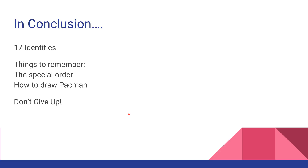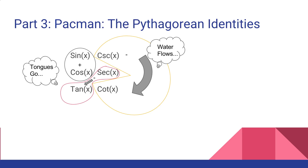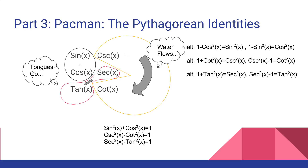So in conclusion, you've quickly learned 17 identities. You were probably staring at that trig sheet for a long time trying to memorize them, sometimes just using Quizlet. If this didn't work for you, stick with it — it's really about perseverance. All you need to remember is how to draw Pac-Man and the special order: sine, cosine, tangent on one side and cosecant, cosecant, cotangent on the other. Once you learn how to draw Pac-Man, it's really worth it to get all six Pythagorean identities.